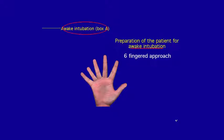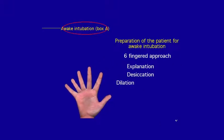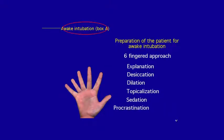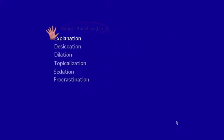We're going to look at awake intubation with a six-finger model. Those six elements are: explanation, desiccation, dilatation, topicalization, sedation, and procrastination — which in this context really means time management.